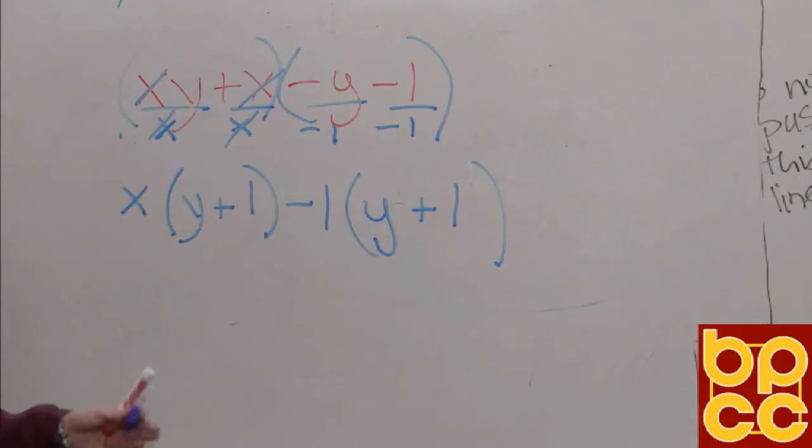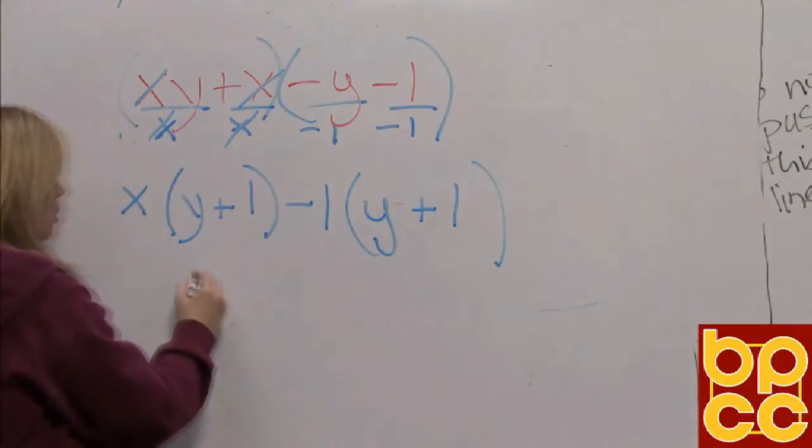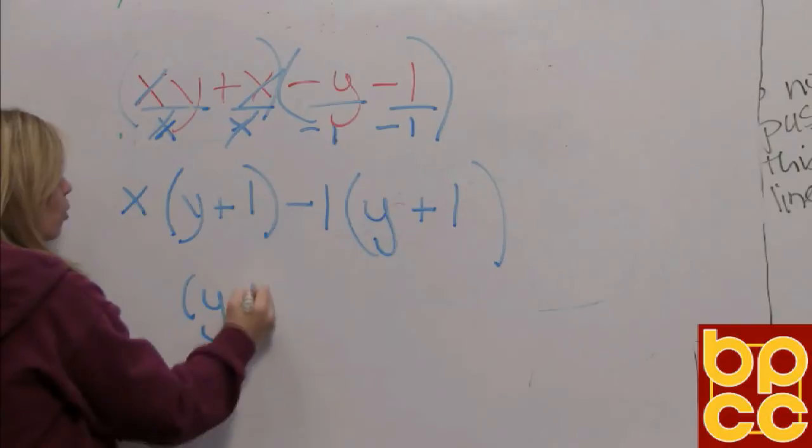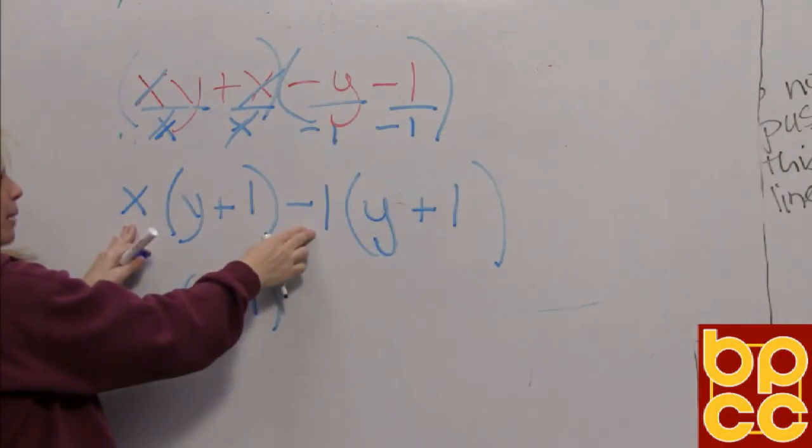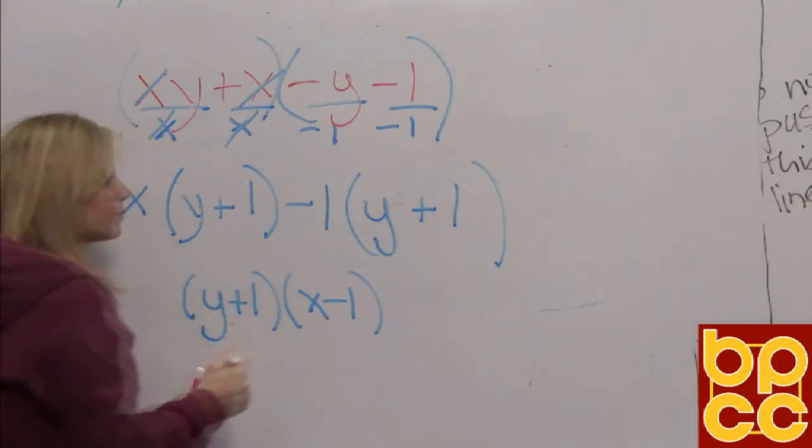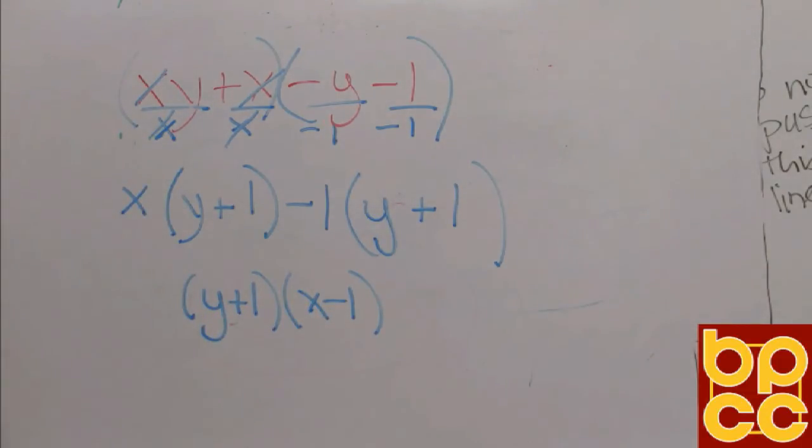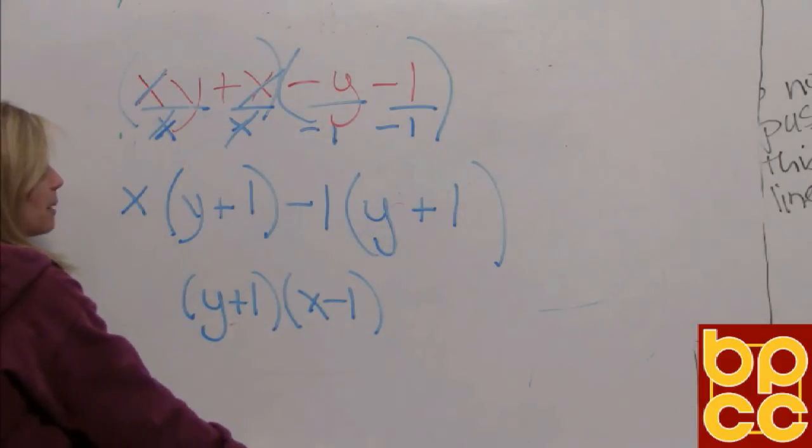Now, we know we did grouping correctly. The parentheses are identical. So we'll write that parentheses first, y plus 1, what they have in common. We'll write in the other parentheses what was on the outside, x minus 1. Every time you factor by grouping, you will have two binomials connected by multiplication.